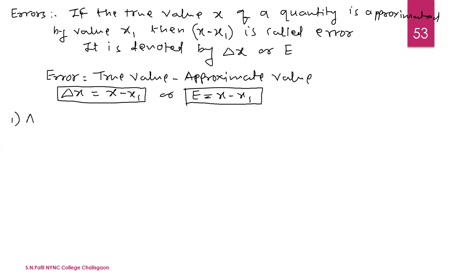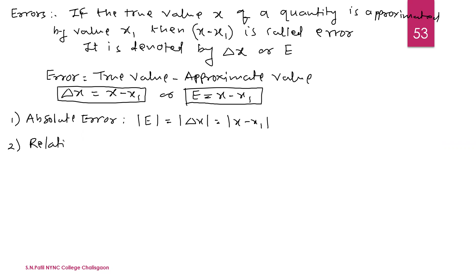The first is absolute error. Absolute error is denoted as mod E, or mod of delta x, that is |x minus x1|. The second is relative error. Relative error is denoted by E_R and is the ratio of error to its true value — that is, delta x divided by x.